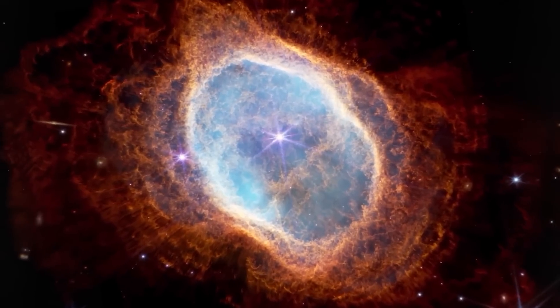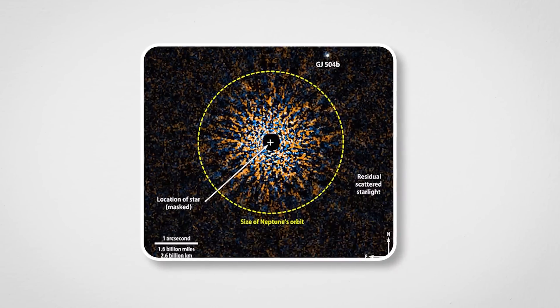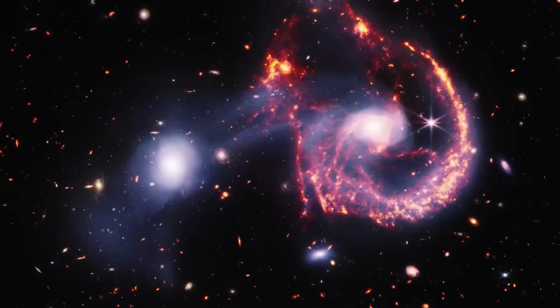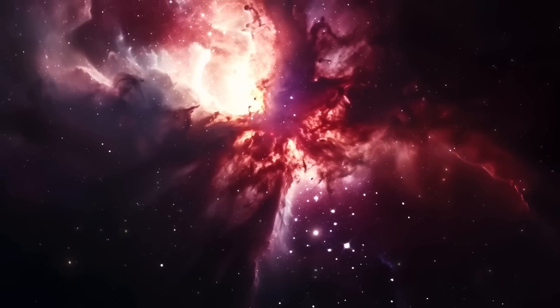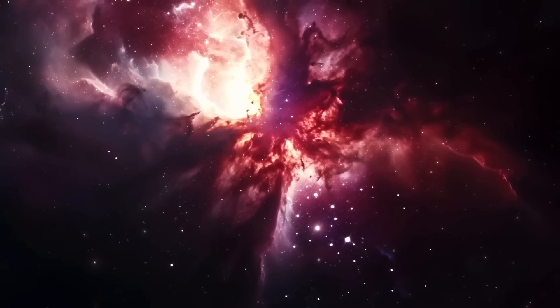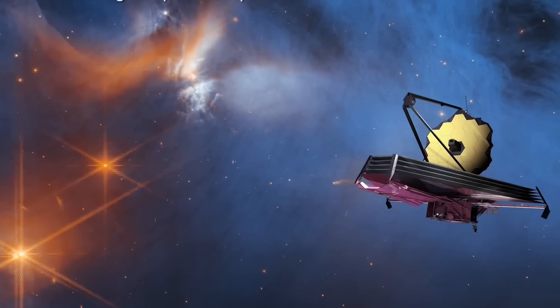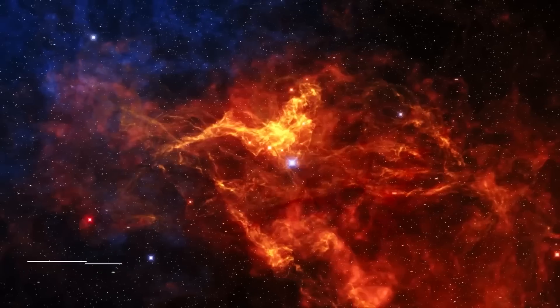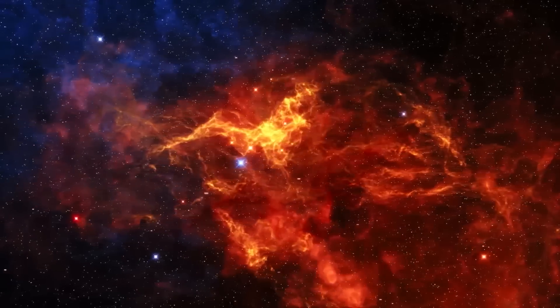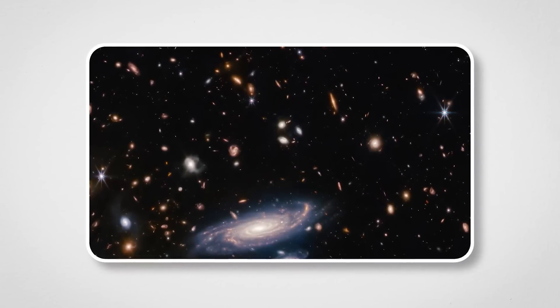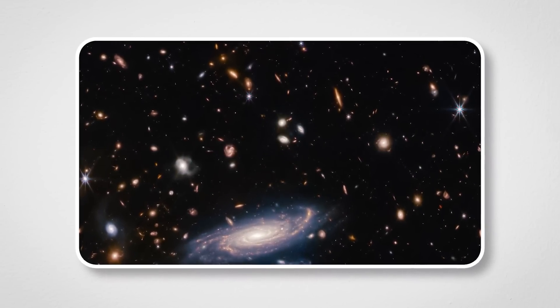Planets like Gliese 504b don't usually form this far out, which is making astronomers rethink some of their big theories about how giant planets come together. Now you might be thinking, why does this matter? Gliese 504b is more than just a pretty face. This planet challenges what we thought we knew about how planets form. Most of the time, gas giants like this one form closer to their stars where there's plenty of material to pull together into a planet. But this one is way out in the boonies, defying the usual rules.